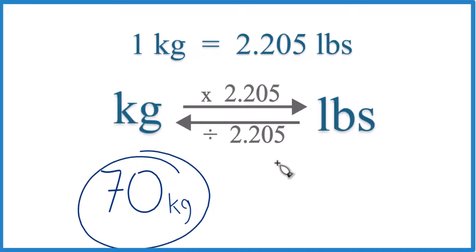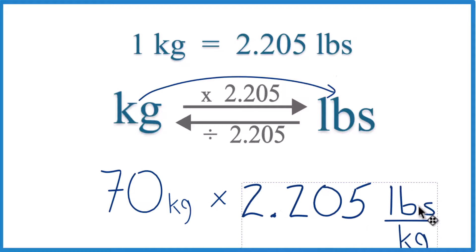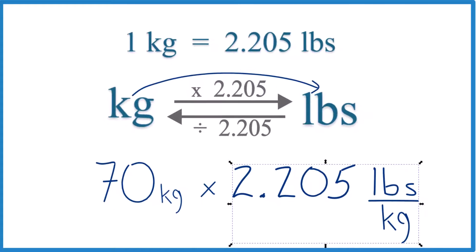We have 70 kilograms, we want to get to pounds, so we are going to multiply kilograms to pounds by 2.205, like this. And note that that's 2.205 pounds per kilogram. That's the conversion factor we're using.